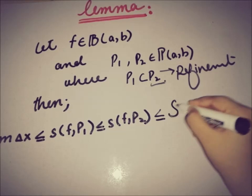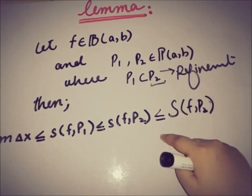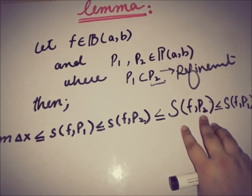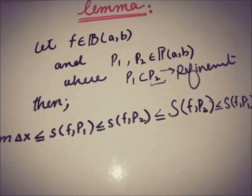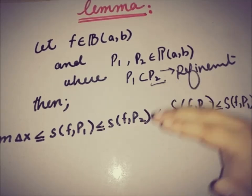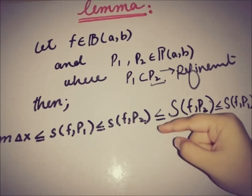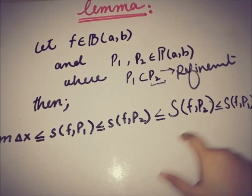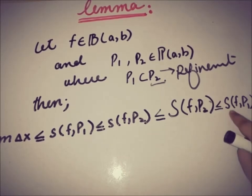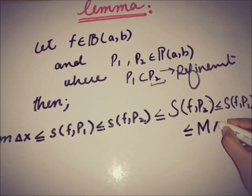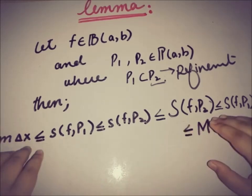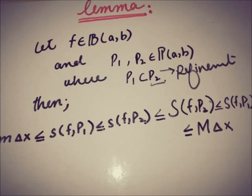This is also less than or equal to capital S(f, P2), which is less than or equal to capital S(f, P1). The upper sum has more value than the actual area under the curve, and with a finer partition P2 we get a lower upper sum that is closer to the actual area. Small s must be smaller than capital S, and capital S(f, P1) is less than capital M·Δx, where capital M is the supremum of the values of f over [a, b].